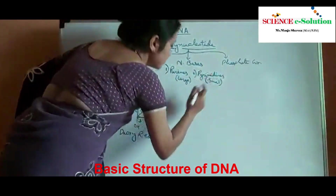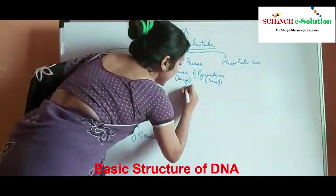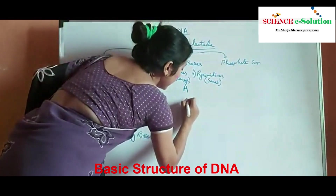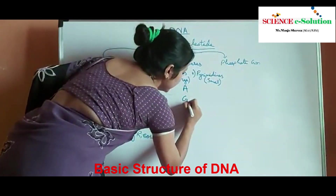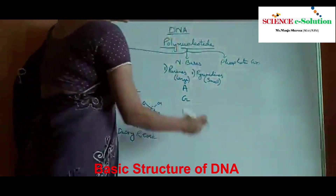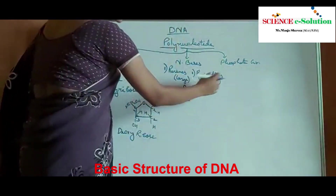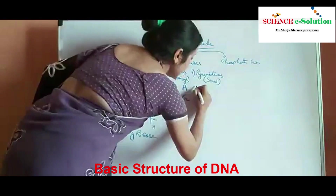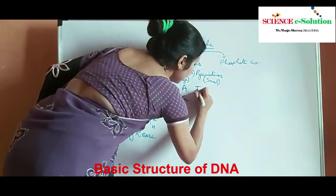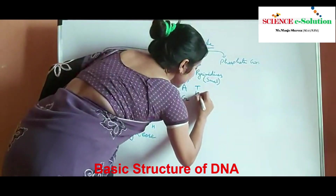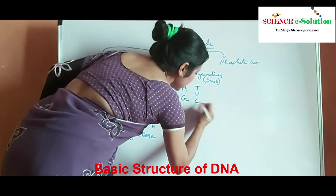There are two types of purines: adenine and guanine. And pyrimidines — they are of three types: thymine, uracil, and cytosine.